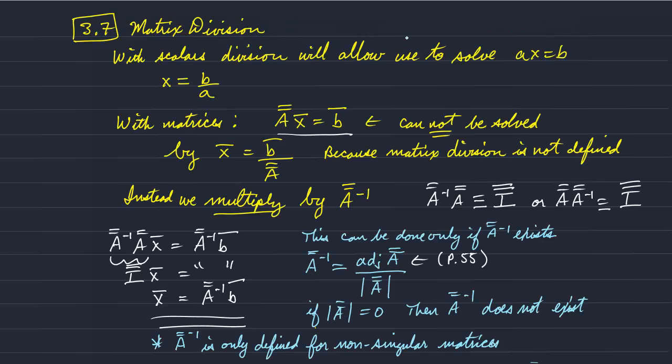Okay, so that is a summary of matrix division. Again, it's really a multiplication by its inverse. And the inverse matrix only exists for non-singular matrices. So I'll conclude this video here. Thank you.